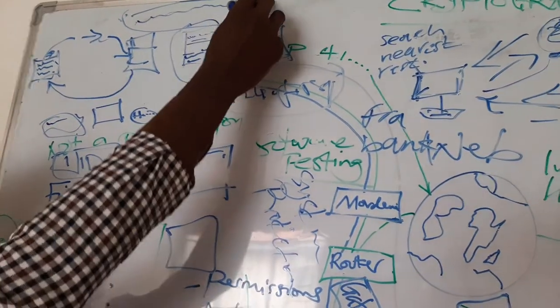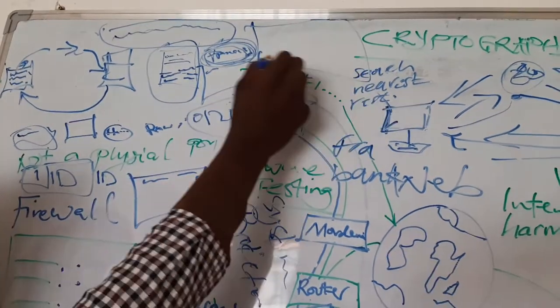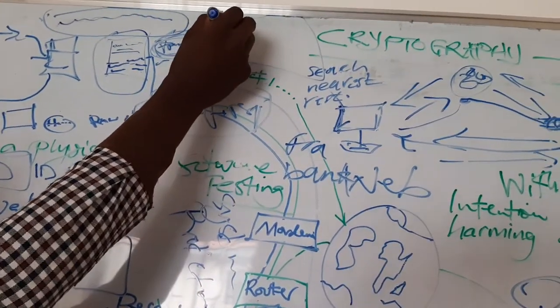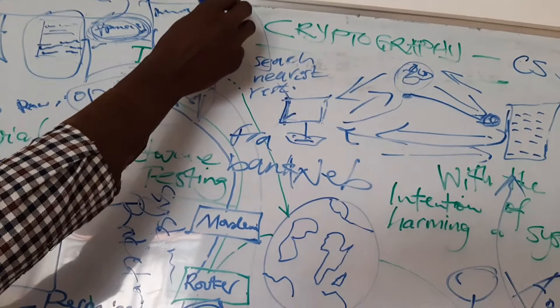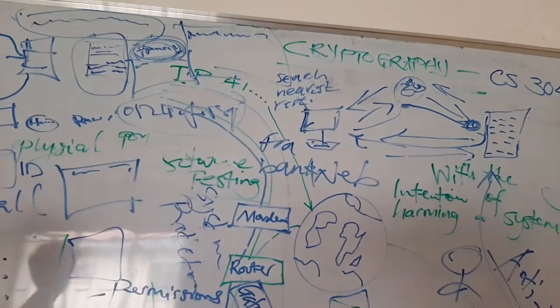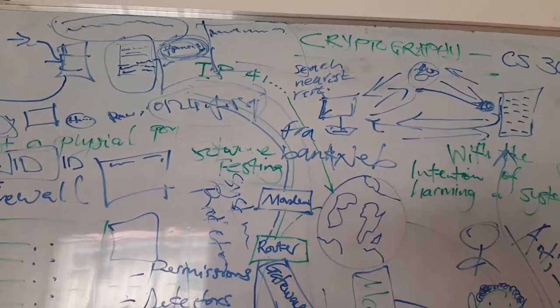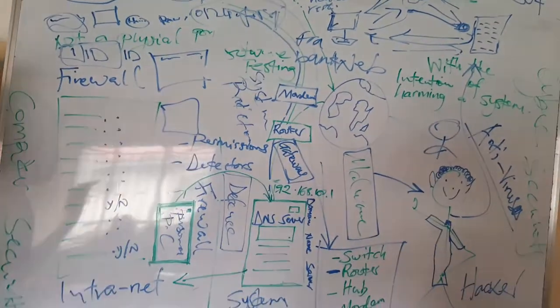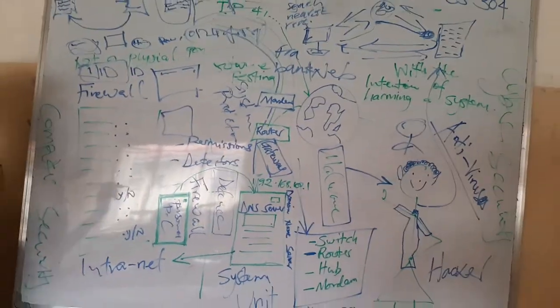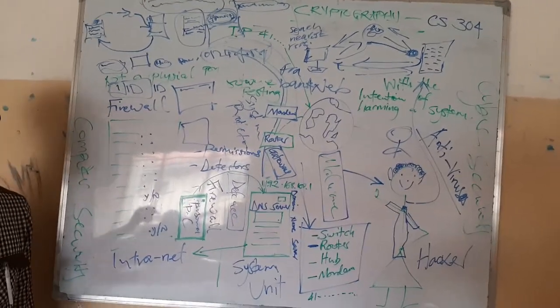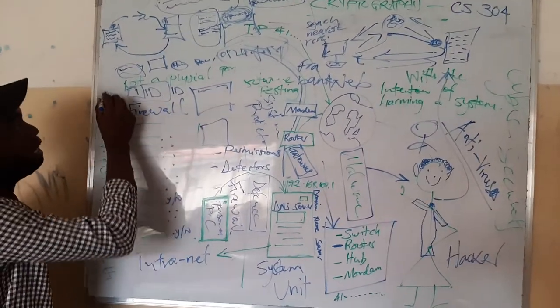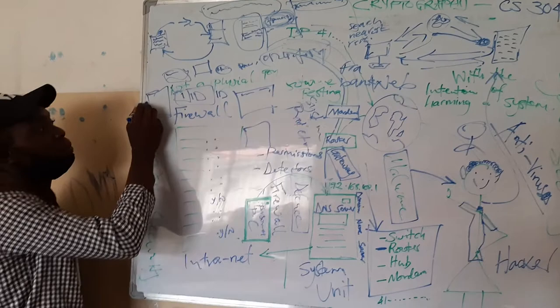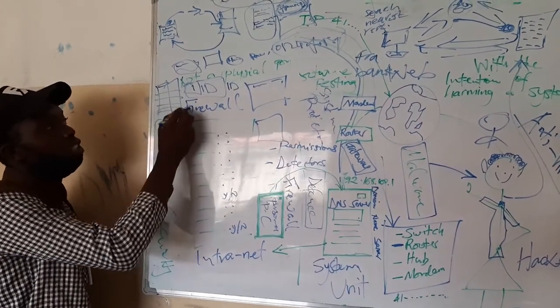The hacker usually comes into the system and steals information by knowing the main address that directs them into your system. But if they don't know this, that means it is impossible for the hacker even to go into your system. Because hacking, number one, mainly hacking only works on scripting. So if a hacker has got a script exposed to them, then they have 100% authority over your system.